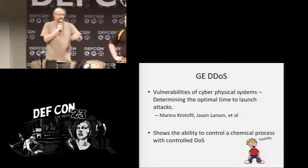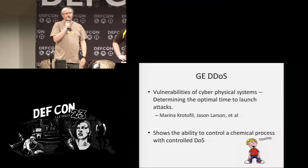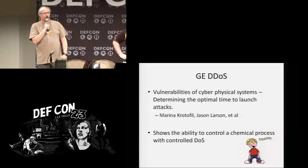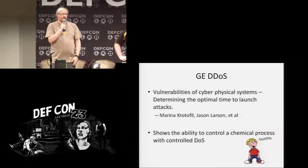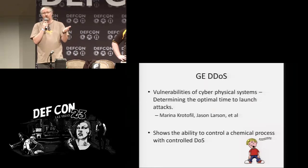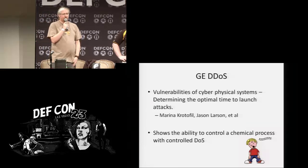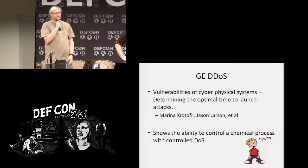Why does DOS matter? In the ICS community we try to reference great work where we see it. Marina and Jason Larson's talk digs really deep into the physics of damage and exploitation in industrial control systems. They showed in their paper that having a DOS in certain types of chemical process control is enough to give you almost complete control over the process. Go look up that paper and you'll understand why we're trying to raise DOS as a much more serious vulnerability in industrial control systems.